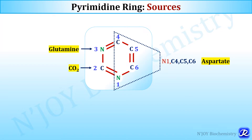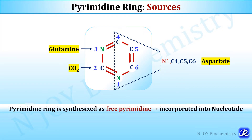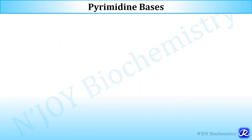The synthesis of pyrimidine is simpler as compared to purines. Pyrimidine ring is synthesized as a free pyrimidine unlike purine, and later it is incorporated into nucleotide. There are 3 pyrimidine bases: cytosine, uracil and thymine.